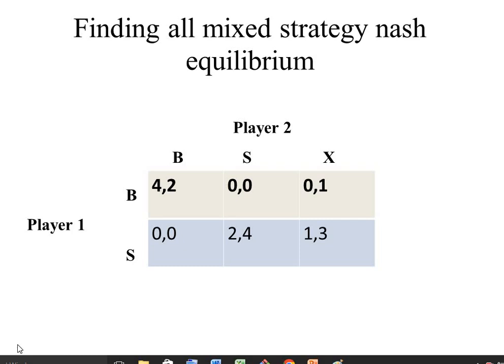Hello, welcome back to my channel Vision India. Today I am going to show you how to find out all possible mixed strategy Nash equilibria by just looking at a payoff matrix. In this example, we have two players: player one and player two. Player one has two actions B and S, and player two has three actions B, S, and X. The payoff values are given.